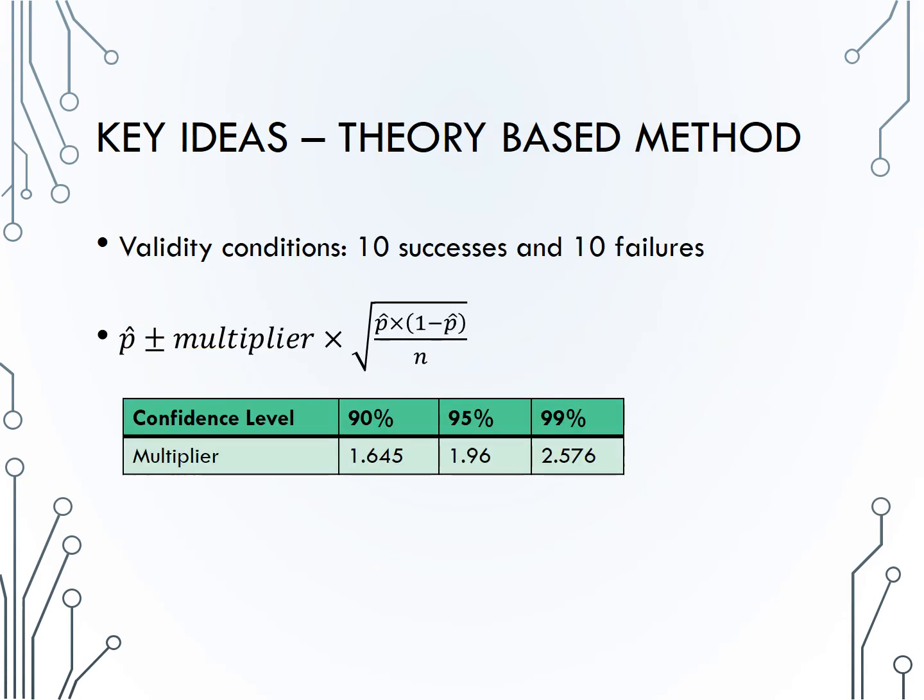If we want to use a theoretical approach to creating a confidence interval for a single proportion, we need to first check the validity conditions, that there are 10 successes and 10 failures in our data. If that is met, then our sample size is large enough for the central limit theorem to work for our data.